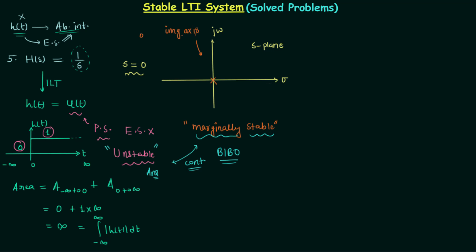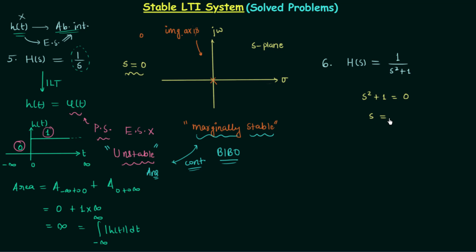Now we move to our sixth and last problem in this lecture, where the transfer function is H(s) = 1/(s² + 1). We follow Method 2 and first find the poles by equating the denominator s² + 1 to zero, giving s = ±j.